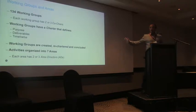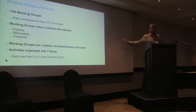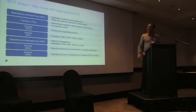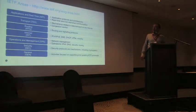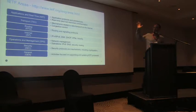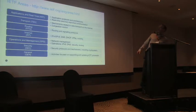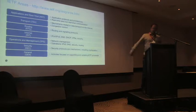These working groups are organised into seven different areas, which are led by an area director. They are quite important in determining which drafts may progress to RFC standard. Those seven areas cover a whole variety of things — applications, routing, the internet. Things like IPv4 and IPv6, and DNS fall under the internet area. TLS would probably fit under applications.